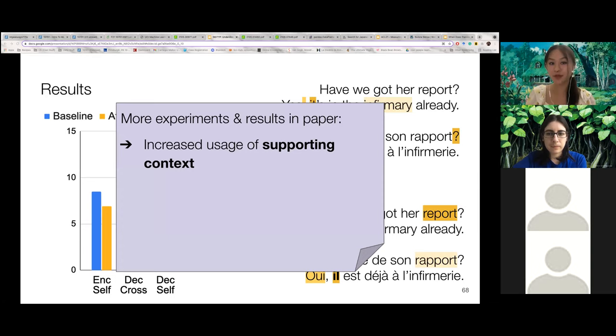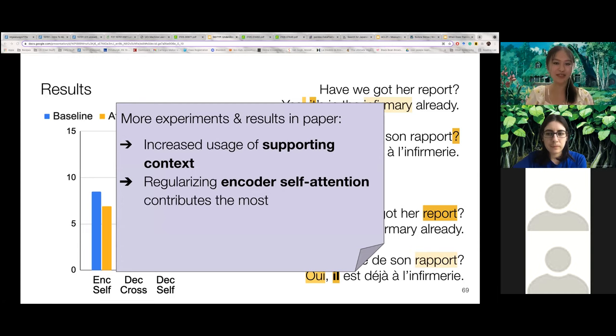And you can find more details about the experiments that demonstrate that models with attention regularization rely more on the supporting context that have been selected by humans. That regularizing the encoder self-attention gives the largest improvements in translation performance compared to regularizing other types of model attention. And that the performance on word sense disambiguation does not improve much when we supervise the model attention using rationales for pronoun anaphora resolution. And you can find the details for these experiments in our paper as well. So this concludes the first part of my talk from this work.